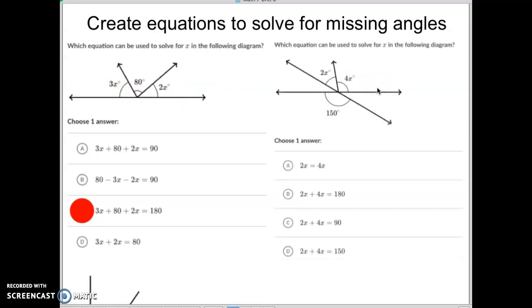Let's take a look at the next one here. So notice on this one, we've got this angle of 150 is the opposite of these two angles, which add up, because they're opposite of this 150. So the 2x plus the 4x has to equal the 150. So we're looking for the one where 2x plus 4x equals 150.